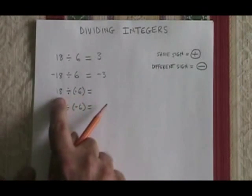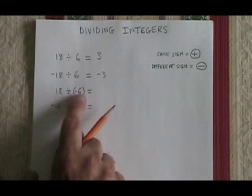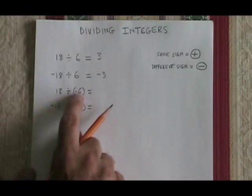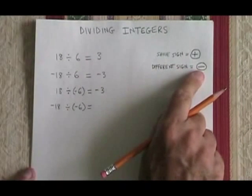18 divided by negative 6 is another situation where you have different signs. This time the 18 is the positive one and the negative 6 is the negative one. But it still gives us negative 3 because they have different signs, so the answer has to be negative.